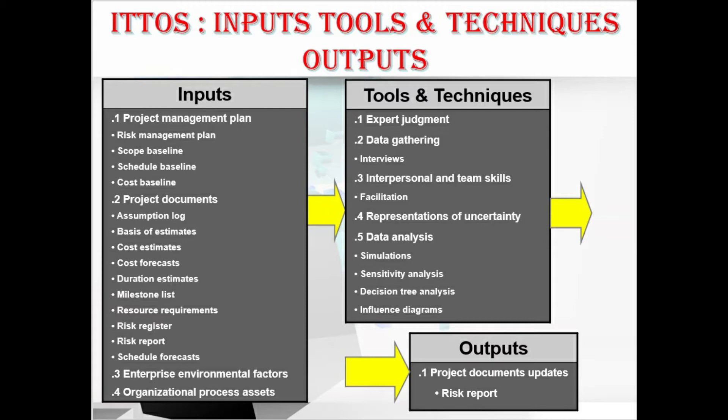We also have EEFs and OPAs — that is enterprise environmental factors and organizational process assets. Coming to tools and techniques, we have expert judgment, data gathering techniques consisting of interviews, interpersonal and team skills consisting of facilitation, representation of uncertainty, and data analysis consisting of simulation, sensitivity analysis, decision tree analysis, and influence diagrams. In outputs we have project documents consisting of the risk report — only one output here.